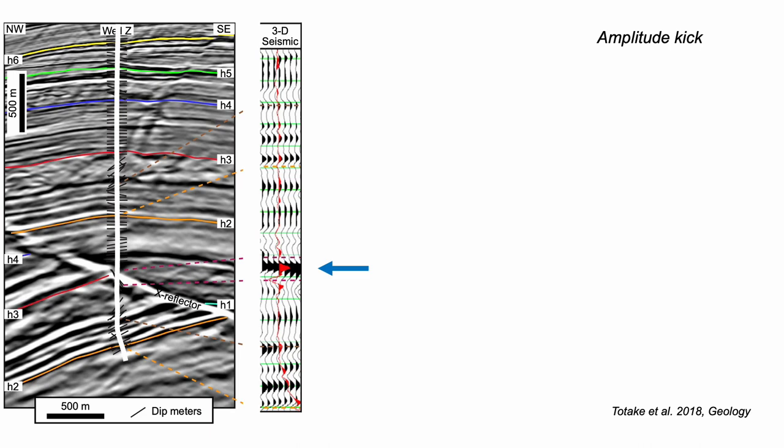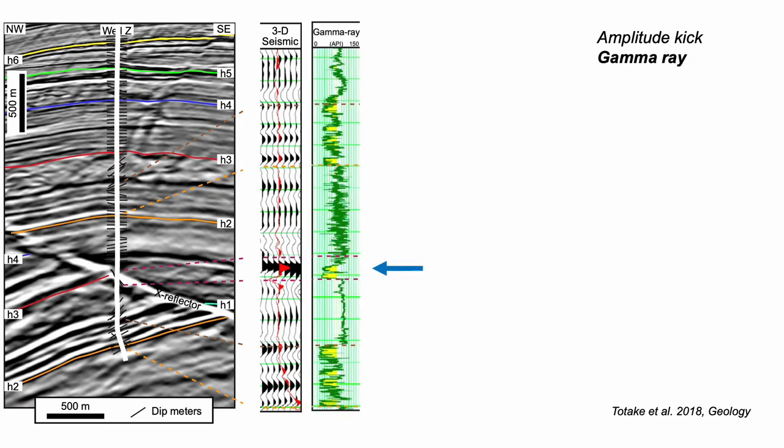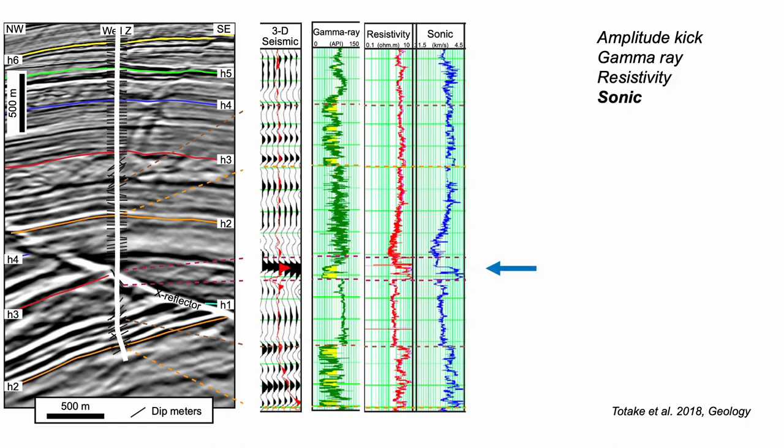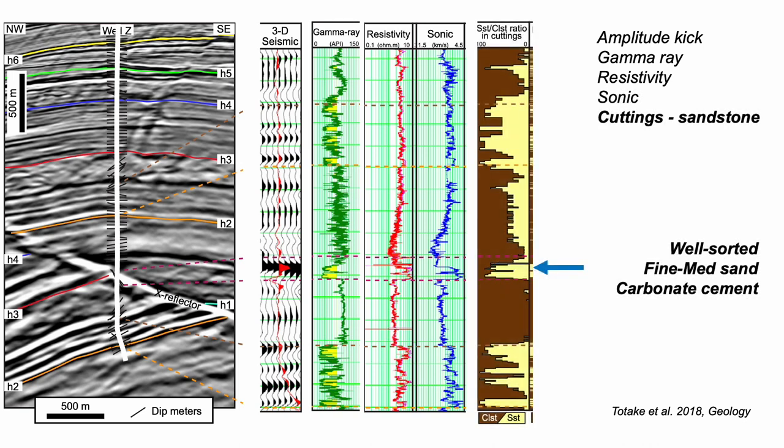The gamma ray log kicks to lows, so more sand than mud rocks, with high resistivity, so little connected water in the pore spaces. And that porosity is occluded because this part of the well rings with a higher than expected seismic velocity. And it's the cuttings from the well that give the story.